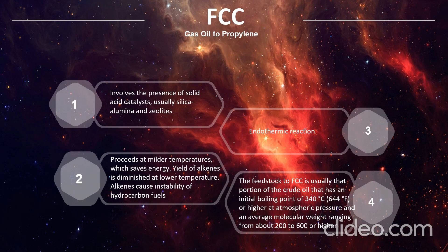Lastly, for FCC from gas oil to propylene, the process involves the presence of solid acid catalysts, usually silica, alumina, and zeolite. It proceeds at milder temperatures, which saves energy. However, the yield of alkenes is diminished at lower temperatures because alkenes can cause instability of hydrocarbon fuels. It is also an endothermic reaction, and the feedstock of FCC is usually that portion of crude oil with an initial boiling point of 340 degrees Celsius (644°F) or higher, and an average molecular weight ranging from about 200 to 600 or higher.